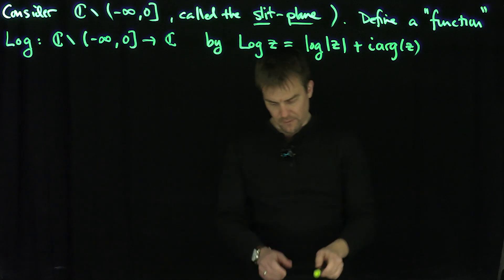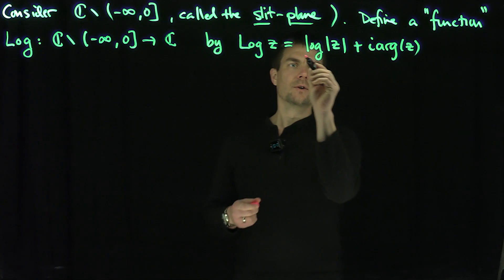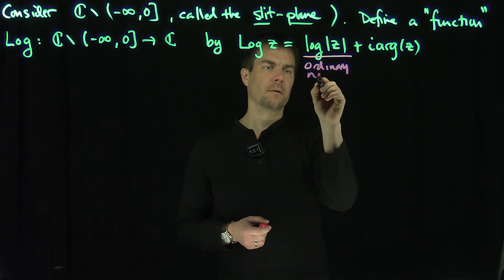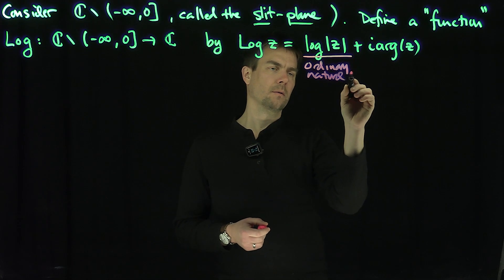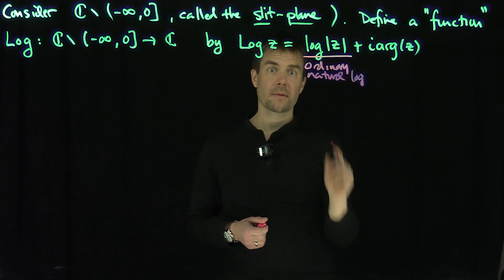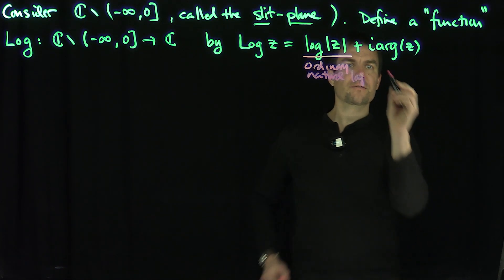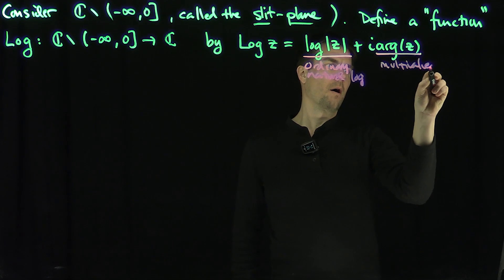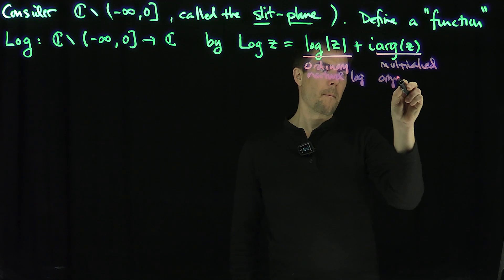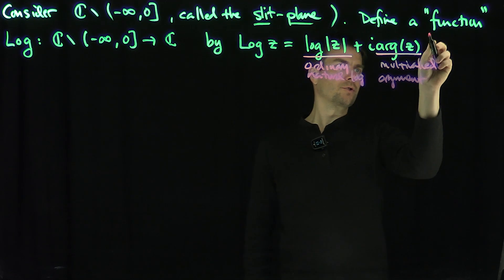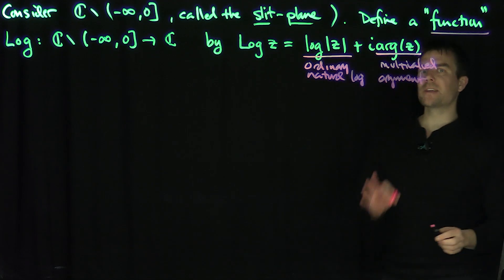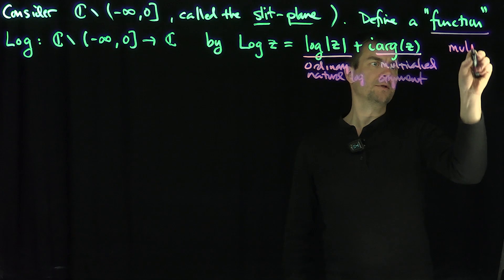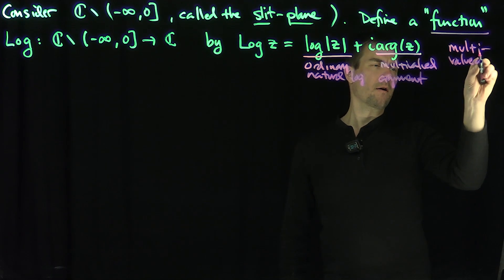This is a loaded definition, because there are lots of things going on. The first term is a real number — the ordinary natural log function that we know from calculus. And then this second term is, of course, the multi-valued argument. So traditionally this is not a function as we know it, but it's a multi-valued function.